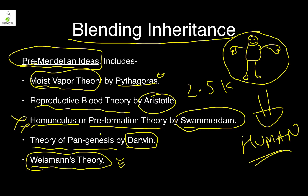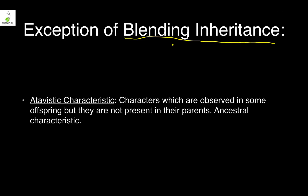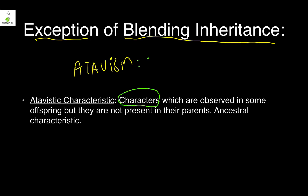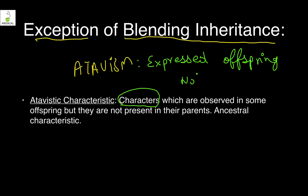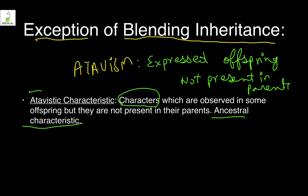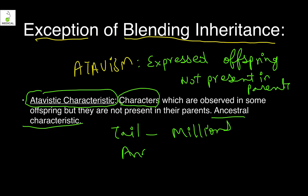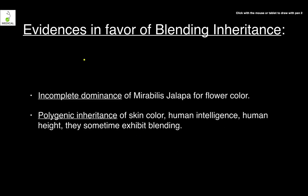Blending means genes come together and blend. However, there are exceptions, such as atavism — characters expressed in an offspring that are not present in the parents. These are ancestral characteristics. For example, a human baby born with a tail: parents don't have tails, but millions of years ago humans did, so the tail is an expression of ancestral characters. This is called atavism.